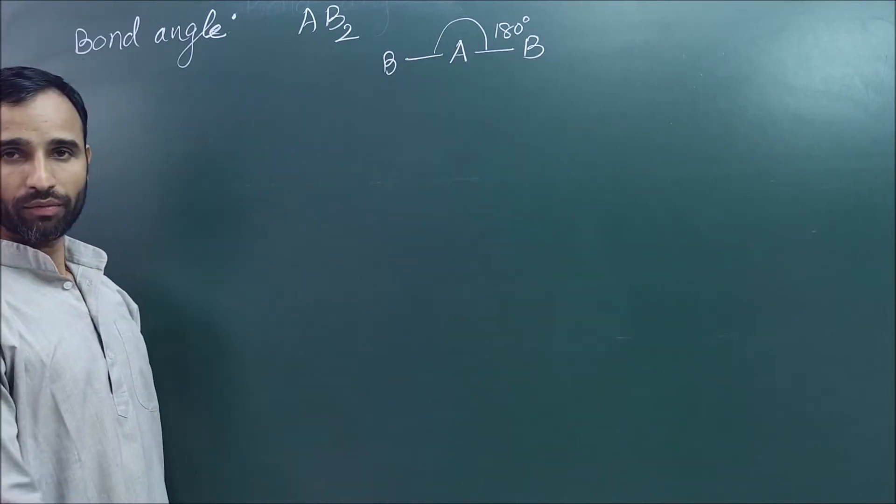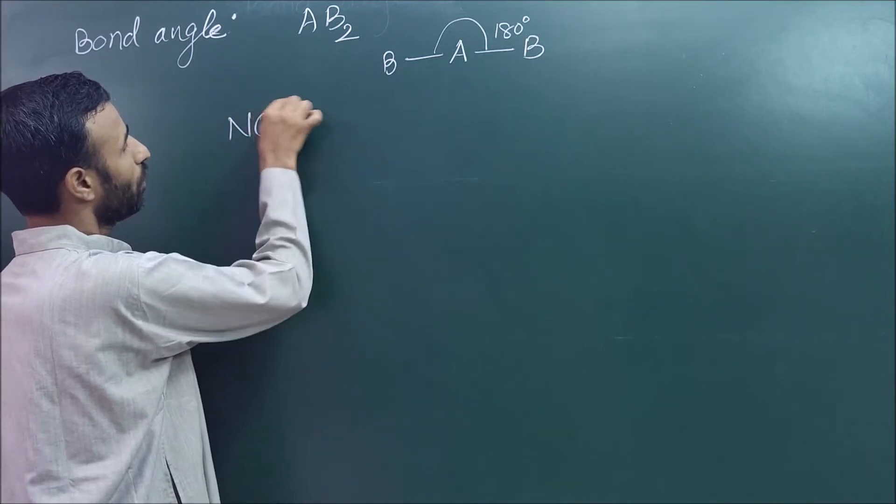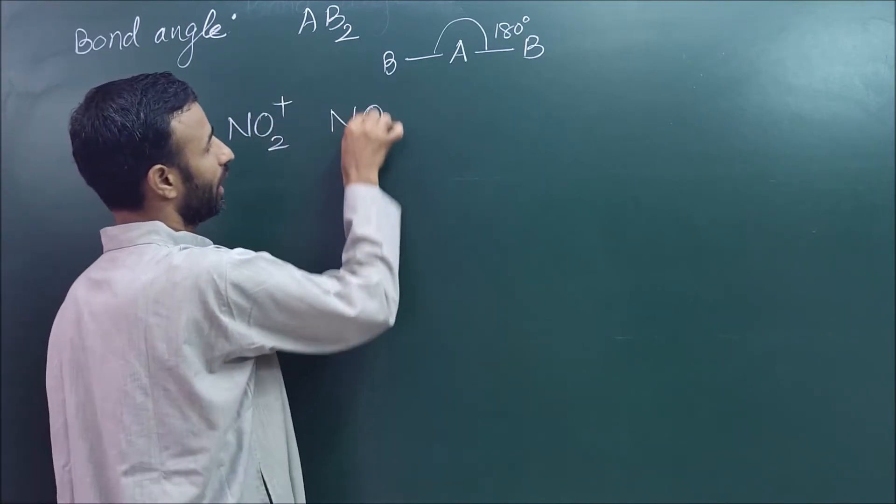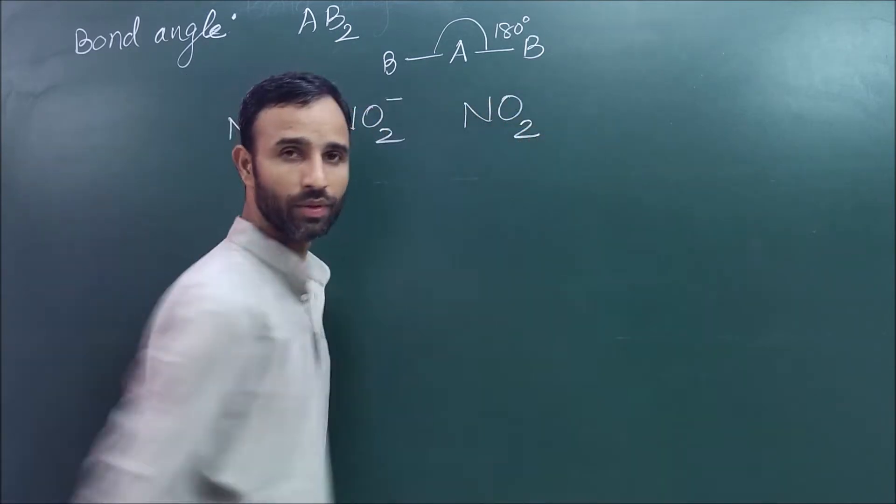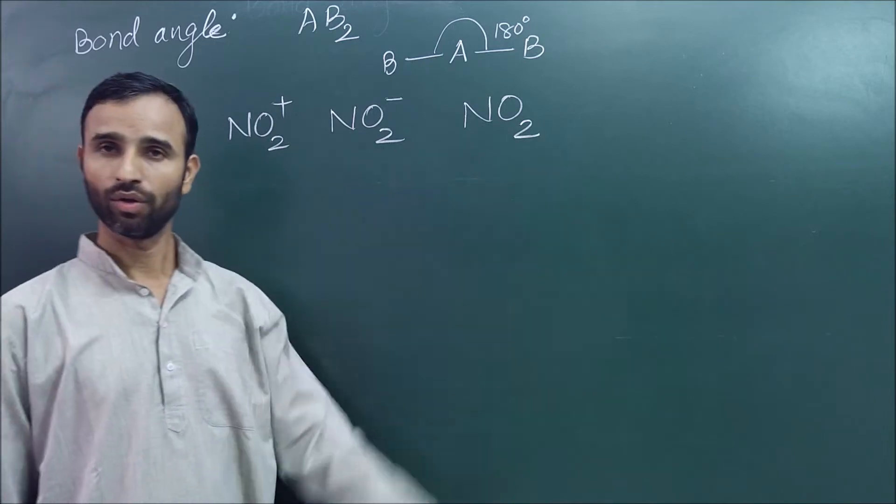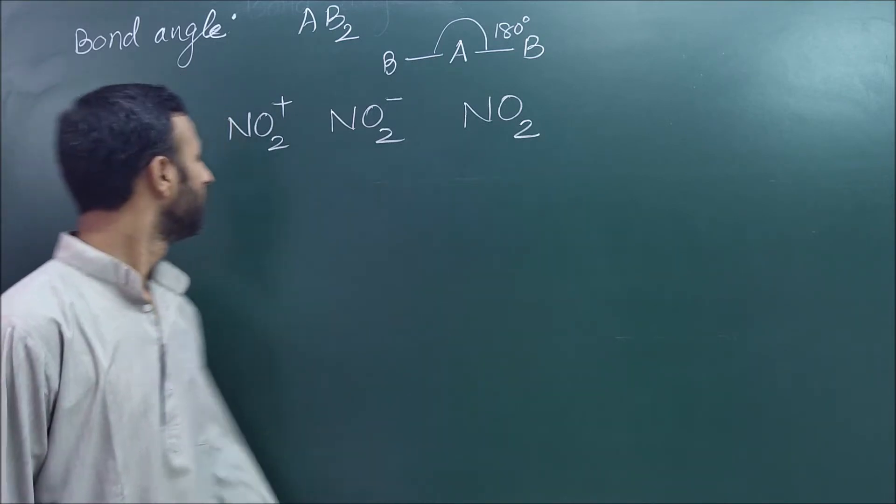Today we have an example of NO2 positive, NO2 negative, and NO2. Out of these three, what is the order of bond angle?